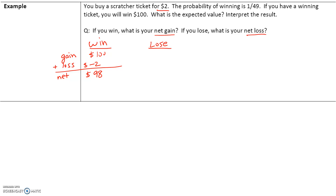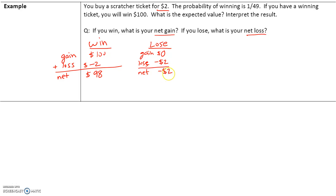If you lose, how much are you gaining? If you lose, you've gained nothing, so your gains are $0. Your loss is $2 because you spent $2 to buy that ticket, so your net is negative $2. To summarize: if you win, you win $100 but spent $2 on the ticket so you're only winning $98; if you lose, your net loss is $2.